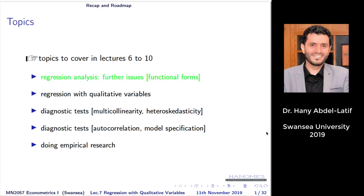As you see, we have a few topics to cover from lecture six to lecture ten — that's the end of the semester. We already covered the first topic, shown in green. Today we will talk about regression with qualitative variables, which is the second topic. Then we'll have two more lectures to the end of the semester, and one lecture for revision and to discuss how to do an empirical research project.